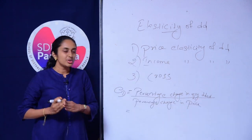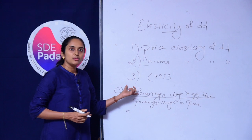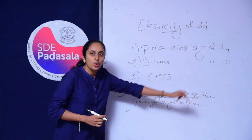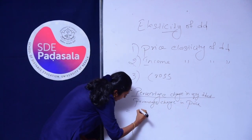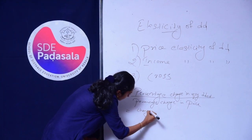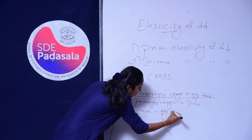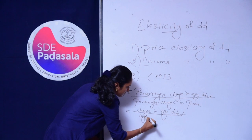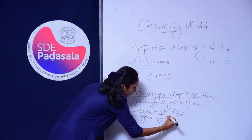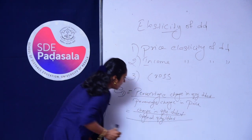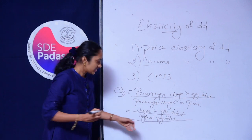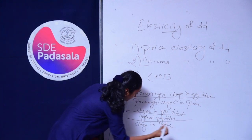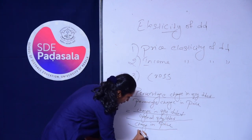Usually, in the case of normal goods, Price Elasticity of Demand will be negative because of the inverse relationship between price and quantity demanded. We can write percentage change in quantity demanded as: change in quantity demanded divided by original quantity demanded. Percentage change in price can be written as: change in price divided by original price.